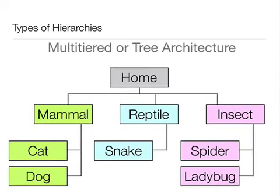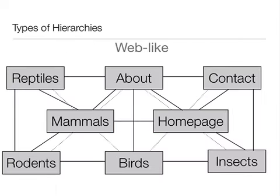A multi-tiered hierarchy, or tree architecture, is a more complex hierarchy scheme with multiple levels, including main categories and subcategories. Web-like hierarchies have all pages linked to each other, and are good for small sites or sites that primarily rely on searching. Browsing can be difficult with web-like hierarchies, since there is no overarching structure or organization.